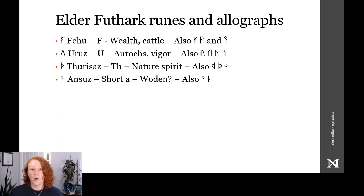Onsuz, the short a, is a powerful supernatural being, probably referring to Woden, and you can also use it for the o vowel, and it also appears in these other two forms.